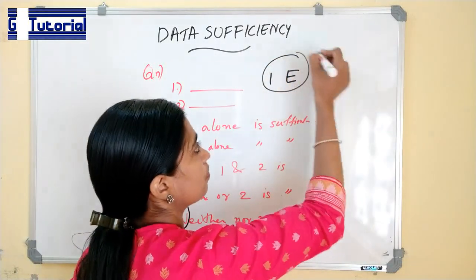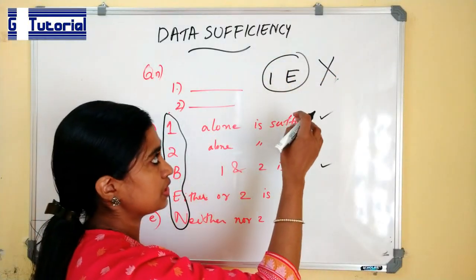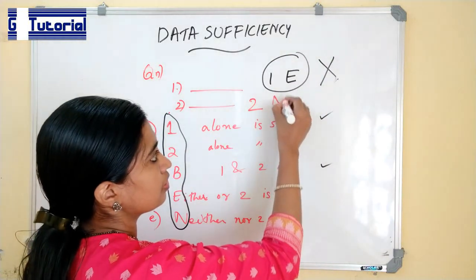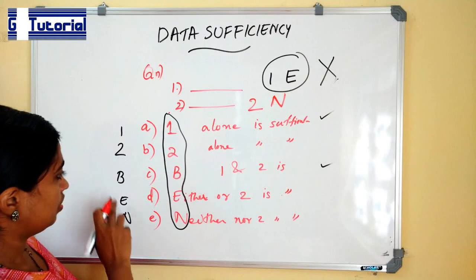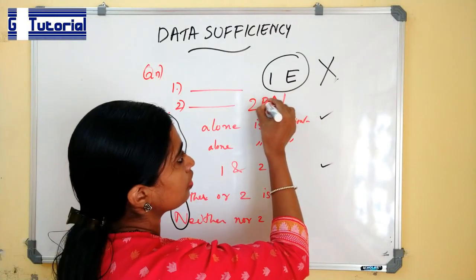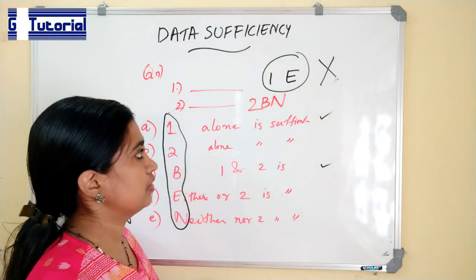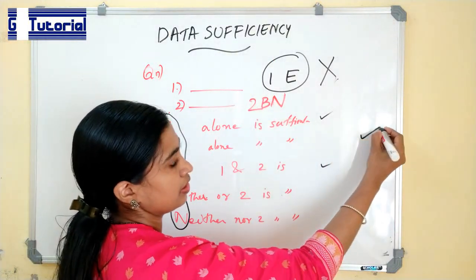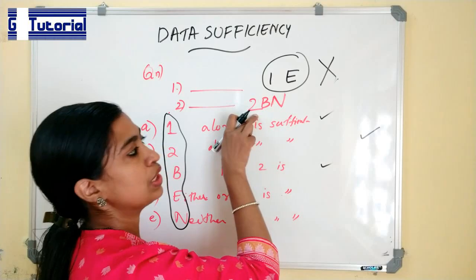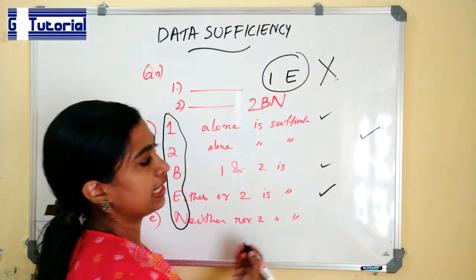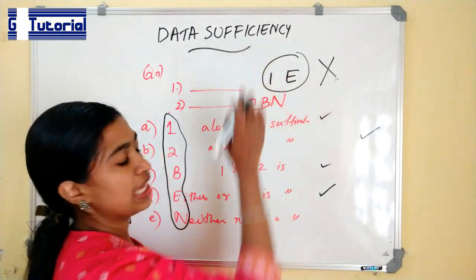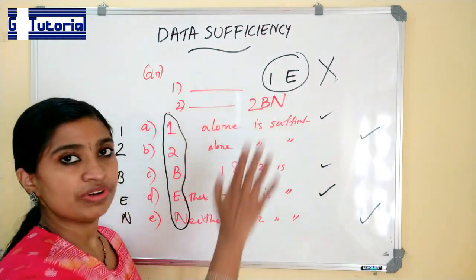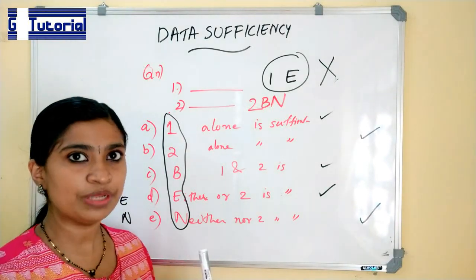If statement one is not able to give the answer to the question, then it can be two alone is sufficient, or neither, or both one and two is required to answer the question. If two alone is able to give the answer, then two is the correct answer. If one and two are both required, then both will be the correct answer. If both are not able to give the answer, neither one nor two is giving the correct answer. You will be more clear when you are doing problems in this portion.